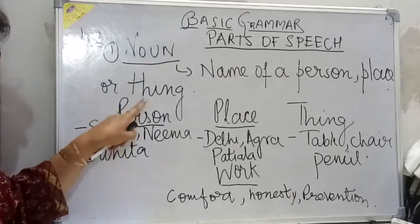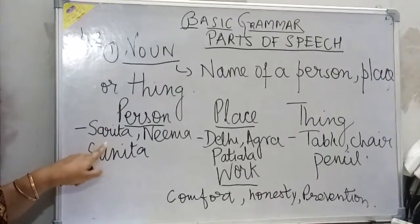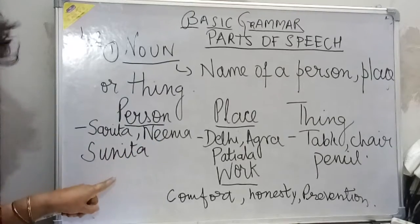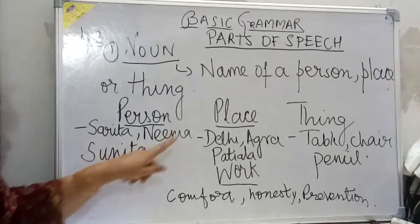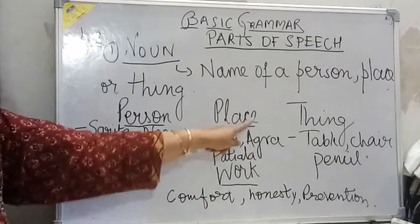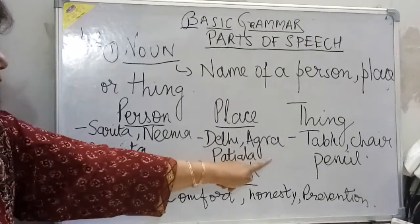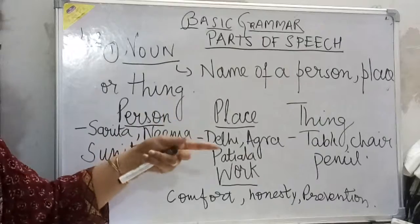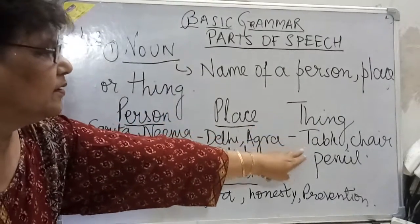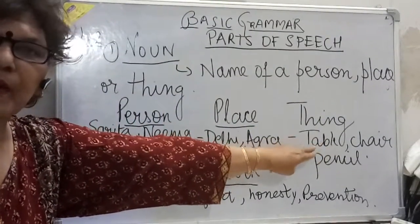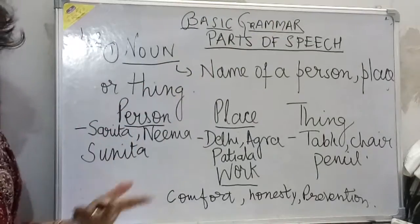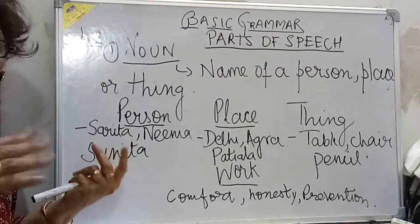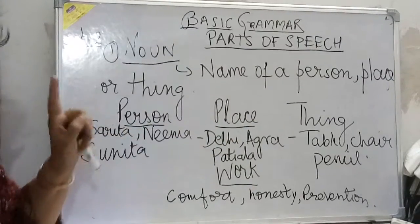Noun — person: for example, Sarita, Neema, Sunita, etc. Place: Delhi, Agra, Patiala, Chandigarh, any place. Thing: table, chair, pencil, fan, cupboard, dining table, cutlery — anything. These are all things and they are all nouns.